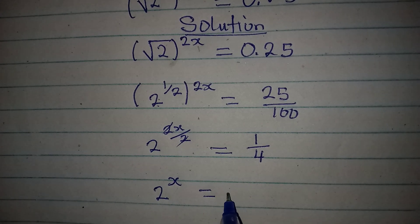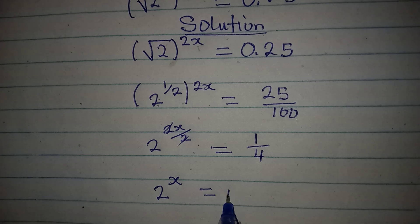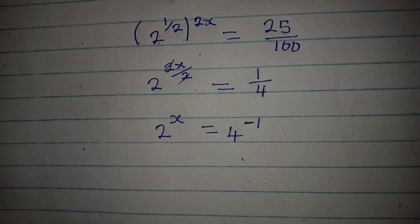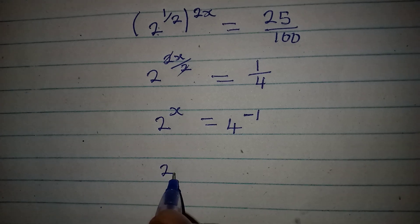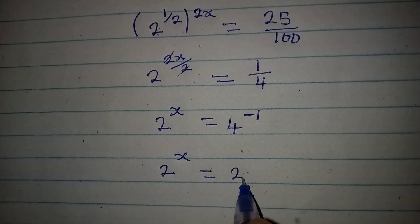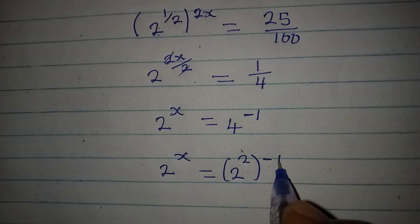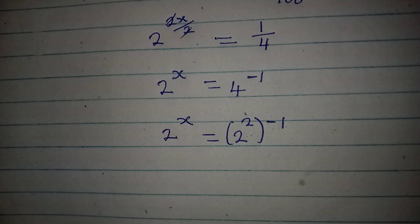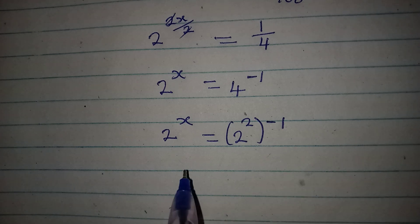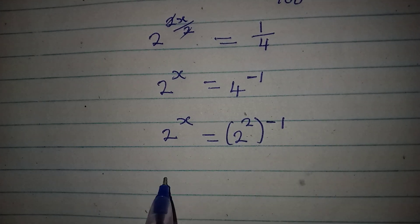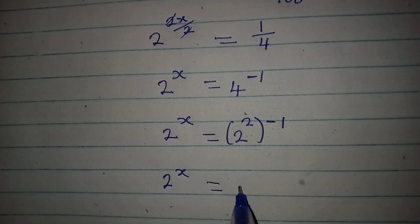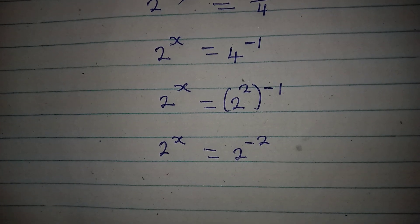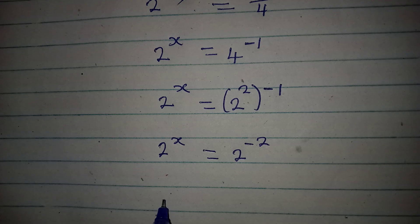Now, 1 over 4, by the law of indices, is 4 to the power of negative 1. From here, 2 to the power of x is equal to 2 squared to the power of negative 1, because 4 is 2 to the power of 2. Multiplying these together, we have 2 to the power of x equal to 2 to the power of minus 2, since 2 times minus 1 is minus 2. Since the bases are the same, x is equal to negative 2.